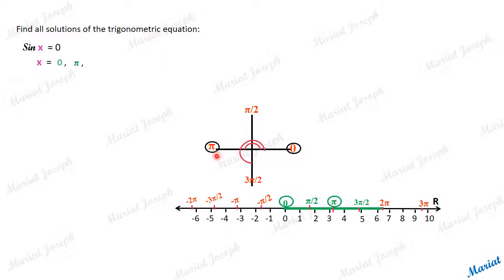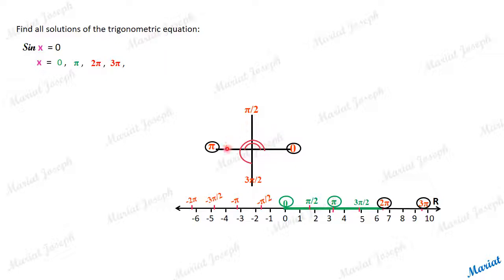We have two solutions: 0 and pi on the number line. Now, if pi and 0 are solutions, let's make their co-terminal angles. A full rotation reaches the same terminal side, so 2pi is also a solution. Then 3pi is also a solution because 3pi and pi are co-terminal: start from 0, go 1pi, 2pi, 3pi — all are solutions, as are 4pi, etc.